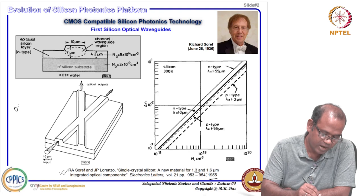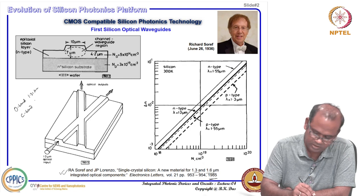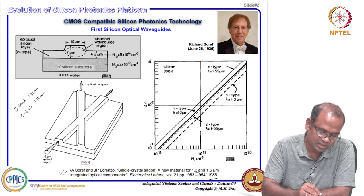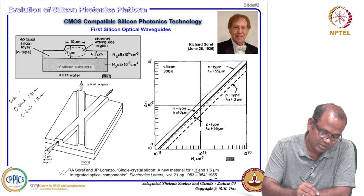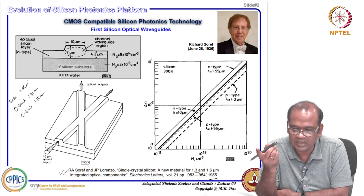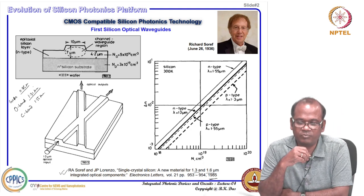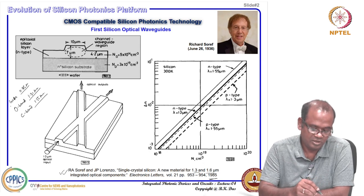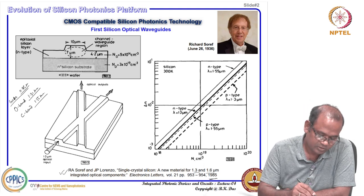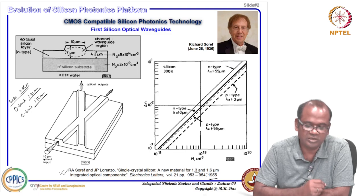The 1.3 micrometer wavelength is called the O-band (1.31 µm) and the C-band is about 1.55 µm. Earlier, the first laser diode was demonstrated in gallium arsenide at 0.85 µm. When optical communication links were established, the first used 0.85 µm, the second used 1.31 µm, and the third used 1.55 µm — these are called the first, second, and third generation optical communication windows.